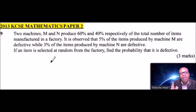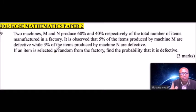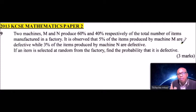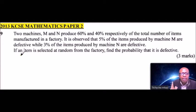Question number 9. Two machines M and N produce 60% and 40% respectively of the total number of items manufactured in a factory. It is observed that 5% of the items produced by machine M are defective, and 3% of the items produced by machine N are defective. If an item is selected at random from the factory, find the probability that it is defective.